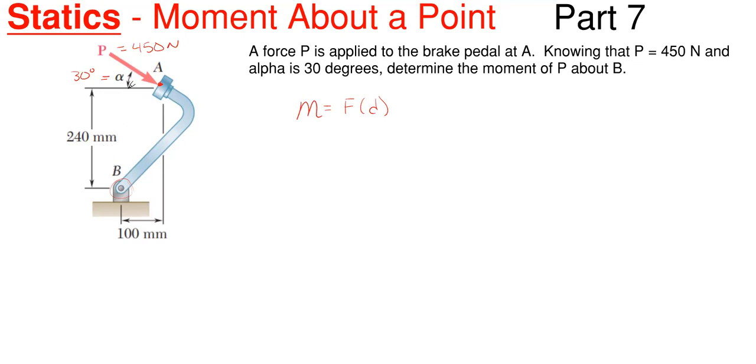Our P force is given at an angle here, so what we're going to have to do is split this P force up into its orthogonal components of X and Y. So we are going to have our 450 newtons here, and then we are told that we are 30 degrees off the horizontal.